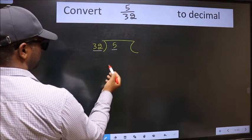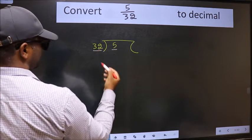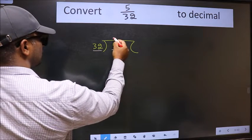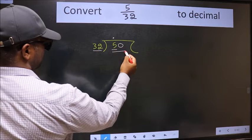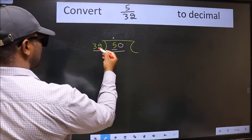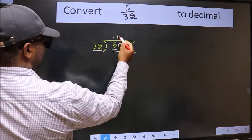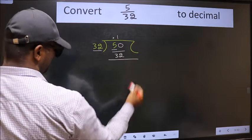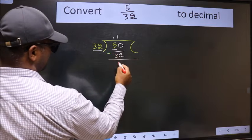Here we have 5 and 32. Since 5 is smaller than 32, we put a decimal point and take a 0, making 50. A number close to 50 in the 32 times table is 32 × 1 = 32. Now we subtract.